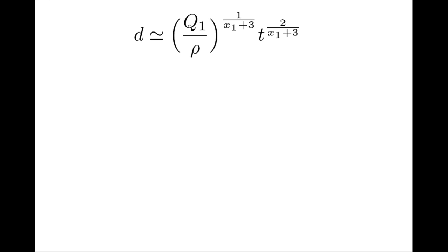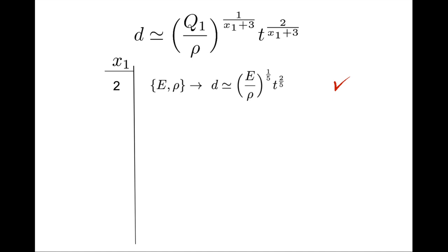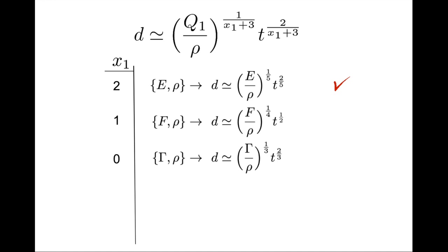If x1 equals 2, we get 2/5 — the explosion regime we've already discussed. Considering x1 equal to 1, we get force and density with time exponent 2/4, that is 1/2. We'll give an example of this scaling in a minute. If x1 equals 0, combining stiffness and density leads to t to the power 2/3, a scaling that is indeed observed, as we will see shortly.